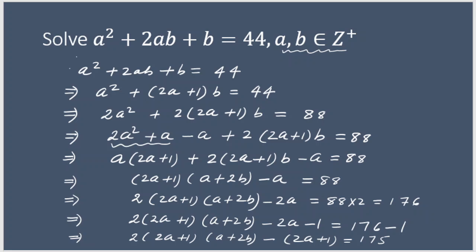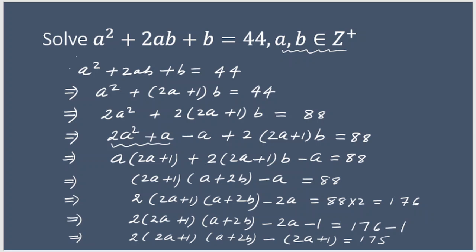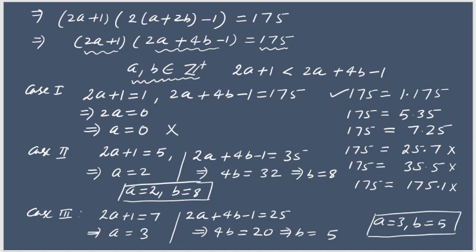So these are the two different ways of solving this problem. In the first method, I factorized the expression and got three different cases. In the second method, I solved for b and used the property that we need integer solutions. Thanks for watching. Subscribe to the channel and like the video.